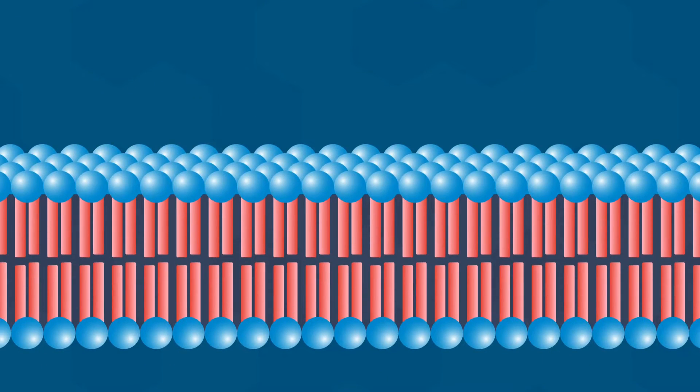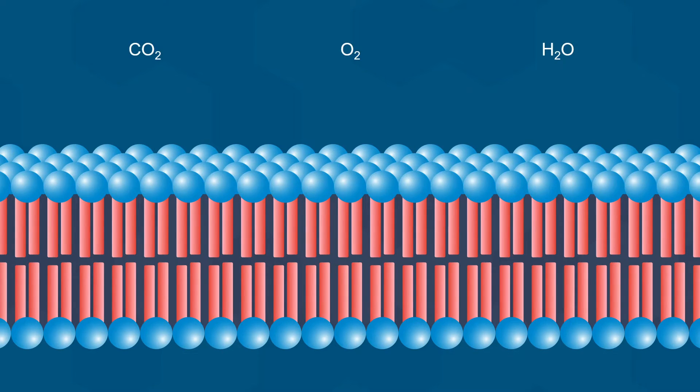One of the big functions of the cell membrane is to act as a barrier and a gate to certain molecules. Some molecules can pass through freely, while others cannot. We will discuss the trends in class, but I will mention a few here. First of all, small nonpolar molecules can easily pass between the phospholipids and enter or exit the cell. Carbon dioxide and oxygen are good examples of this. Water, while polar, can also pass through the membrane fairly easily.